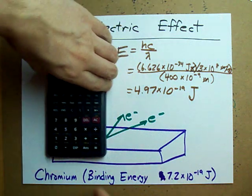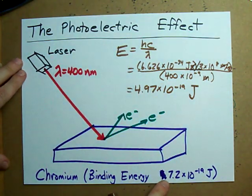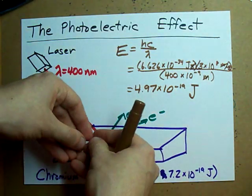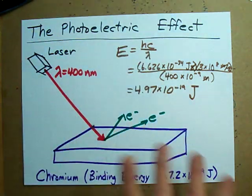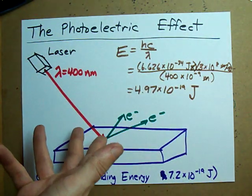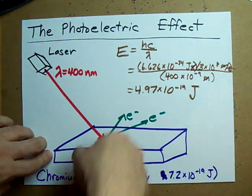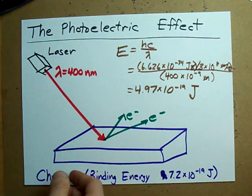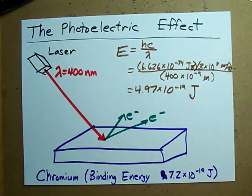So this light has an energy of 4.97 times 10 to the negative 19 joules, and it takes 7.2 times 10 to the negative 19 joules of energy to eject an electron. So this light is obviously not energetic enough. But if it was and it hit the surface of the metal, electrons get shot out. It's the photoelectric effect — it's pretty cool. I have a few more videos talking about the math behind this, so check them out and best of luck.